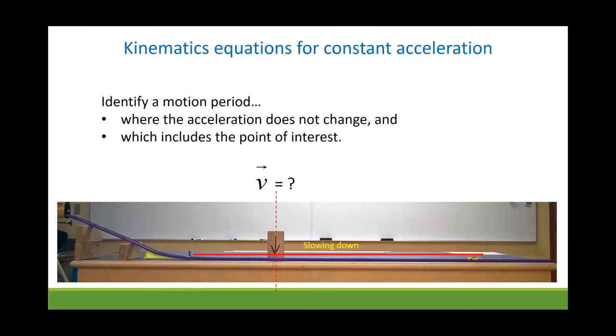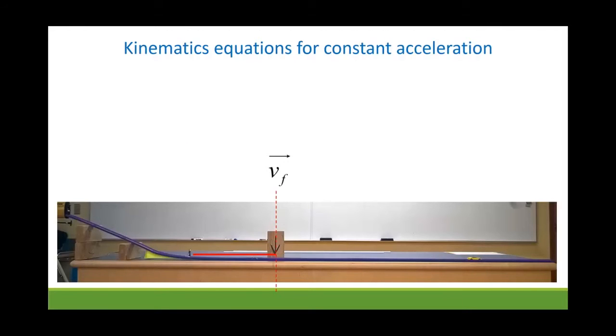But there's another thing we need to consider here too. The v's in our kinematics equations are initial and final velocity. They deal with the velocity at the beginning of a period of motion or at the end of a period of motion, not in the middle. So we need to further refine our period of motion so that our marked point is either the beginning or the end of the motion.